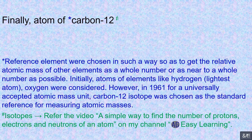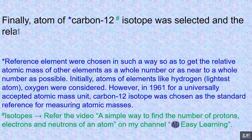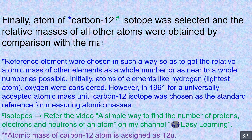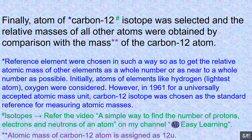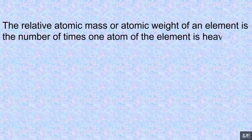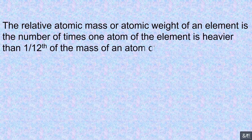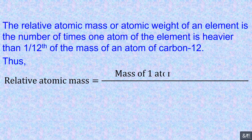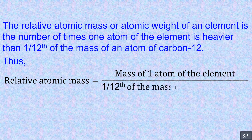The atom of the carbon-12 isotope was selected, and the relative masses of all other atoms were obtained by comparison with the mass of the carbon-12 atom. The relative atomic mass or atomic weight of an element is the number of times one atom of the element is heavier than one twelfth of the mass of an atom of carbon-12. Thus, relative atomic mass equals mass of one atom of element divided by one twelfth of the mass of one C-12 atom.